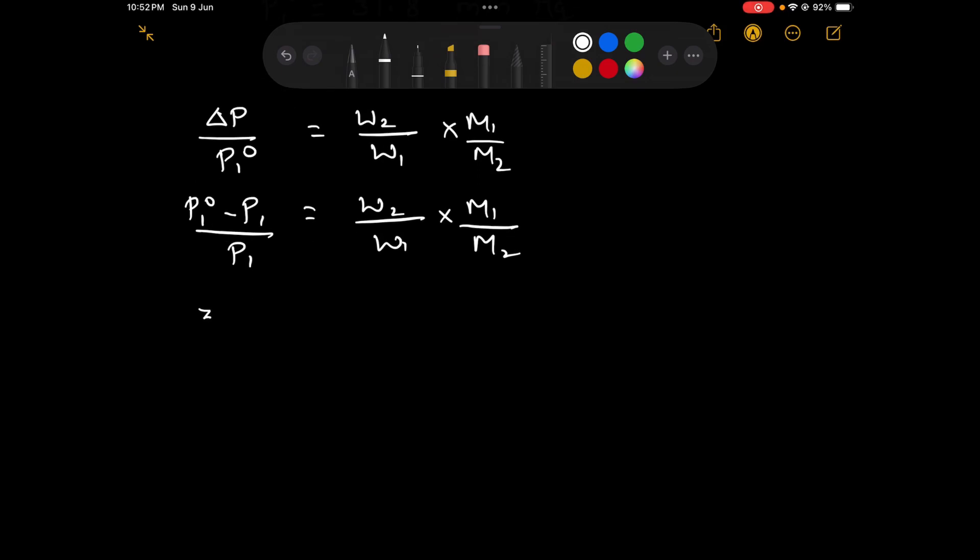Let us substitute: P1° is 31.8 minus P1 that is 30.74 divided by P1° that is 31.8. This equals W2 which is 394 upon W1 that is 622 multiplied by M1.